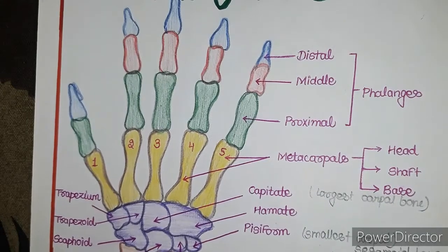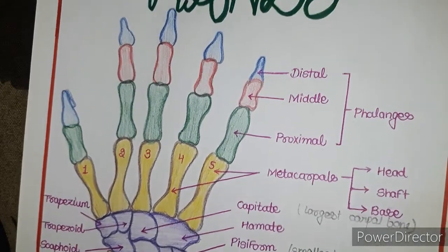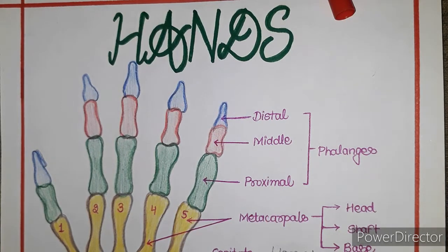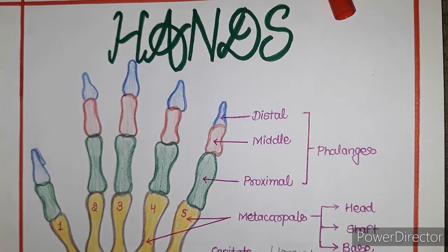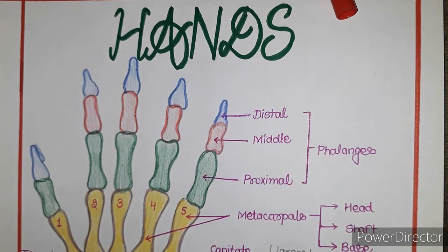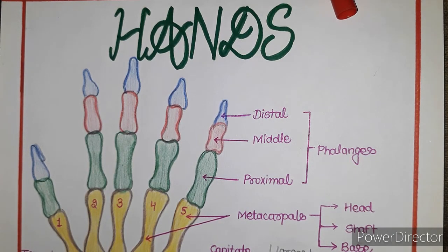We have now completed all the bones of the upper limb. In further videos, we will discuss the arteries, nerves, and muscles of the upper limb. Please like, subscribe, and comment on my channel. My email and Instagram ID are in the description box.